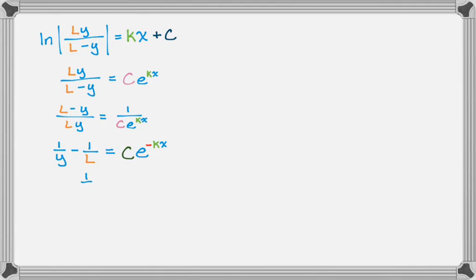Now I'm going to get a common denominator on the right-hand side, so 1 over y is equal to, the common denominator is L, so I have 1 plus C times L. C is an arbitrary constant, so it can absorb the L, so that's just going to become a new constant, I'm actually going to call it A, and then e to the negative kx, and then that's all over L. Then finally I take reciprocals.